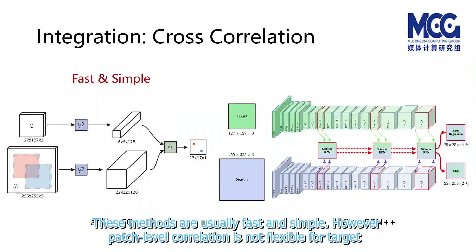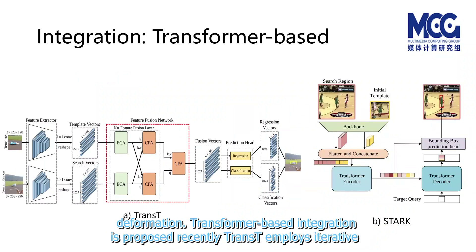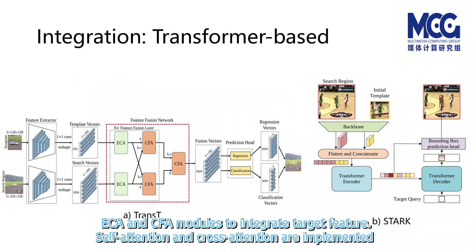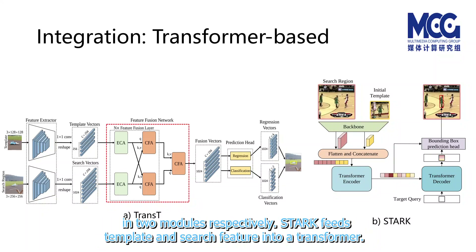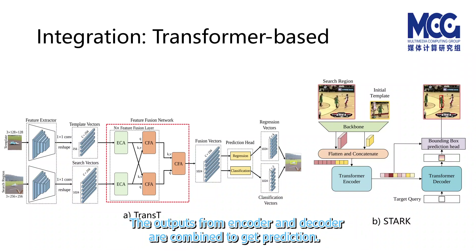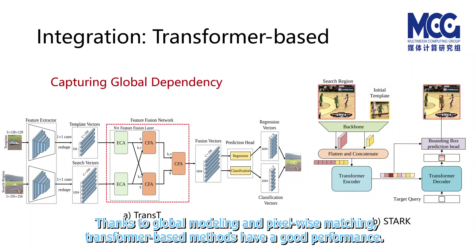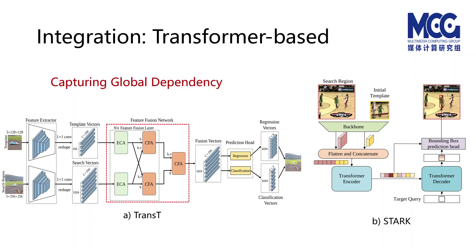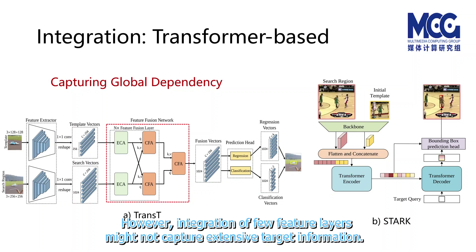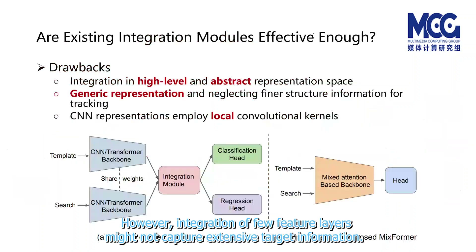However, patch-level correlation is not flexible for target deformation. Transformer-based integration has been proposed recently. TransT employs iterative ECA and CFA modules to integrate target features, with self-attention and cross-attention implemented in the two modules respectively. Stark feeds template and search features into a transformer; the outputs from the encoder and decoder are combined to get a prediction. Thanks to global modeling and pixel-wise matching, transformer-based methods have good performance. However, integration of only a few feature layers might not capture extensive target information.